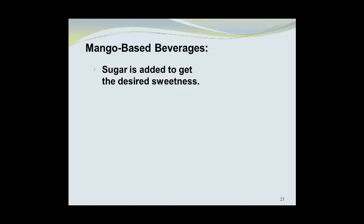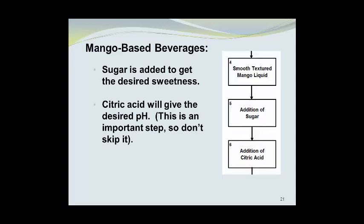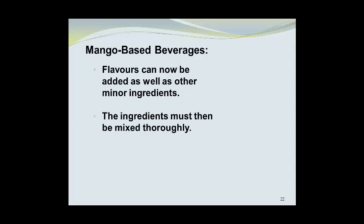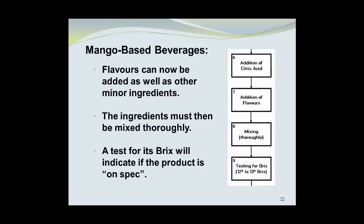Sugar can be added to get the desired sweetness, and citric acid should be added to give the desired pH — this is an important step, so don't skip it. Flavors can then be added as well as other minor ingredients, which may include preservatives or additional ingredients. The ingredients must be mixed thoroughly, and a test for Brix will indicate if the product is on spec with regard to sugar content. The target value is 12 to 13 degrees Brix, meaning 12% to 13% by weight of sugar.